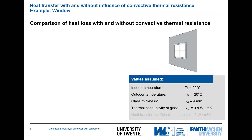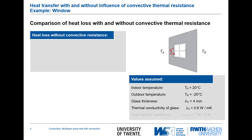We will first compare the heat losses through a window with and without convective thermal resistances. We look at the area-specific heat transfer rate Q-dot double-dash, with an indoor temperature of 20°C and an outdoor temperature of minus 20°C in wintertime. The glass thickness is 4 millimeters and the thermal conductivity of glass is 0.8 W/m·K — a single-pane glass which we usually no longer have in our houses.